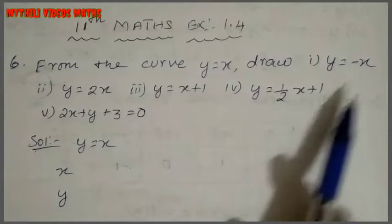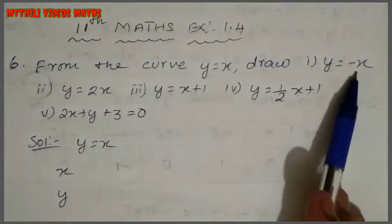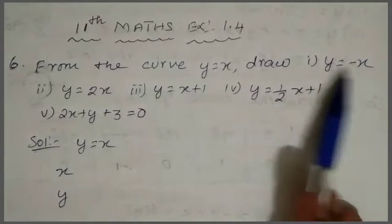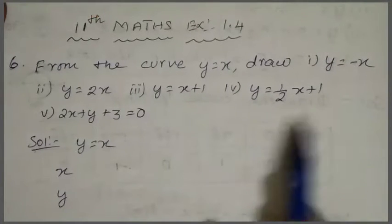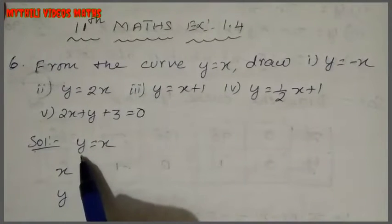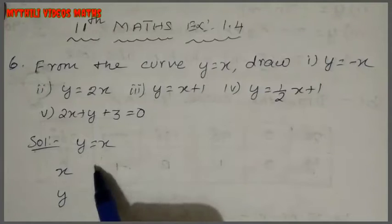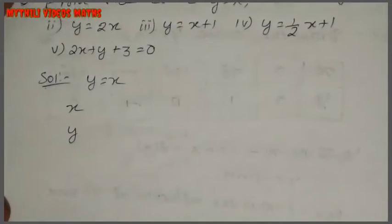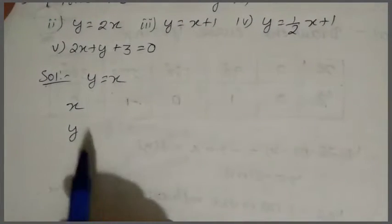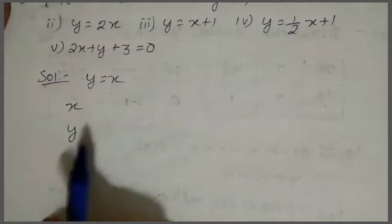First we have y = -x. So we have y = -x — it's simple. First we have to do y = x. How do we do that? Simple — just 2 or 3 points we have to plot.